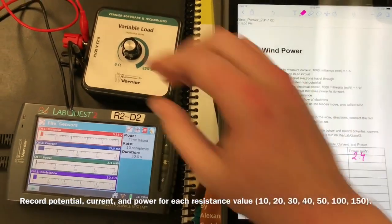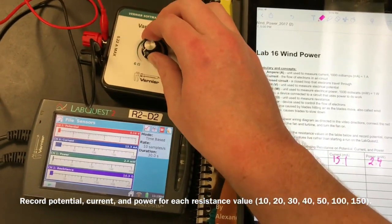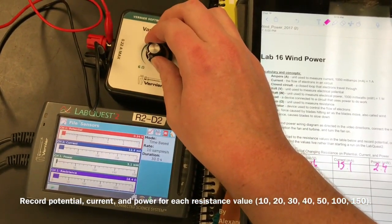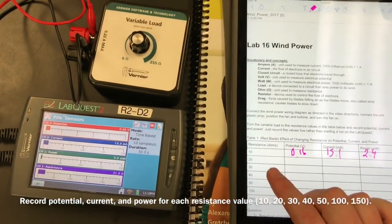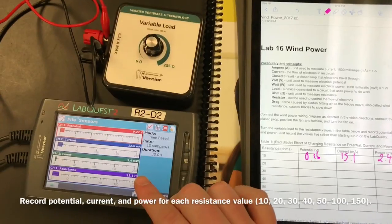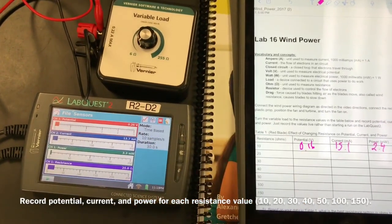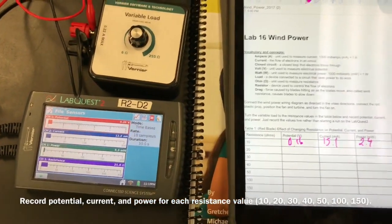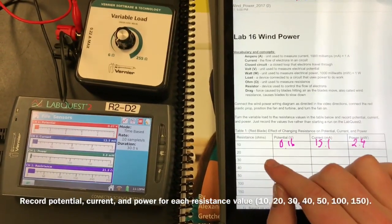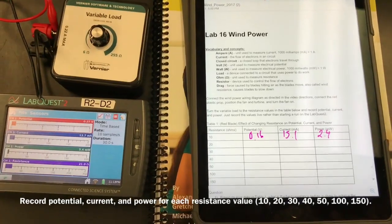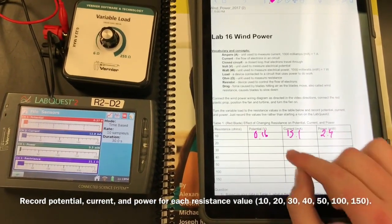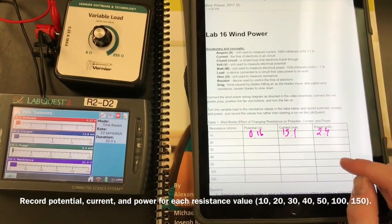And so you're just going to keep going. You're going to keep adjusting the resistance here. Next one is asking for 20. Again, this is really fine. I would call this good for 20. And you're just going to record, again, potential current power. And you're going to go up. So 20, 30, 40, 50, 100, and 150. And so what we're searching for here is which of these settings is going to give us the greatest power reading.